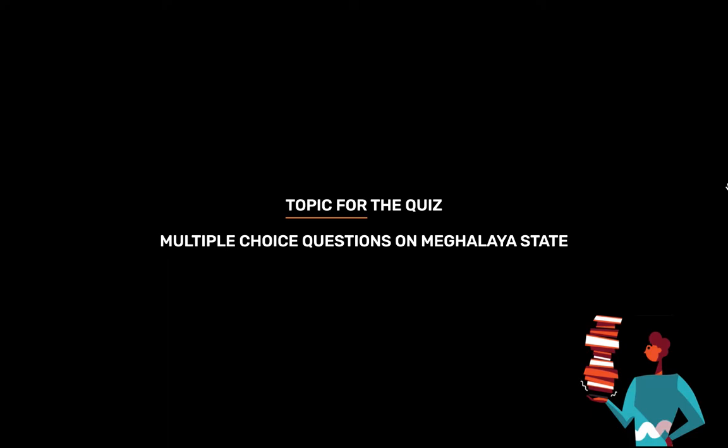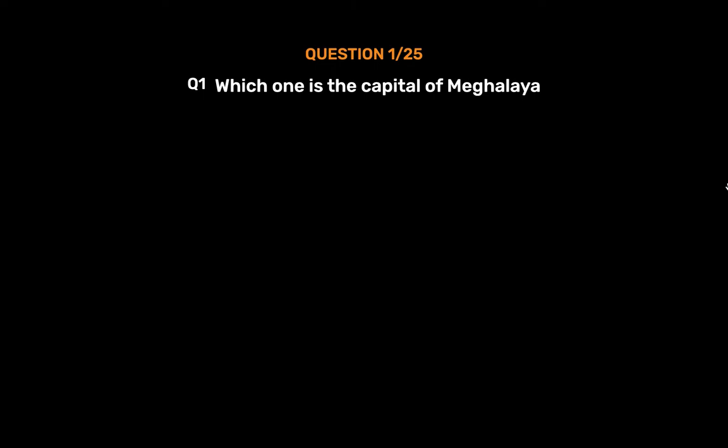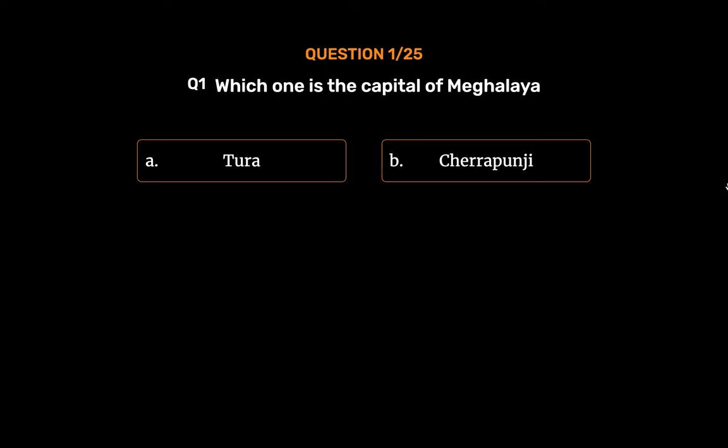Question number 1. Which one is the capital of Meghalaya? Option A: Tura. Option B: Cherrapunji. Option C: Shillong. Option D: Kohima.